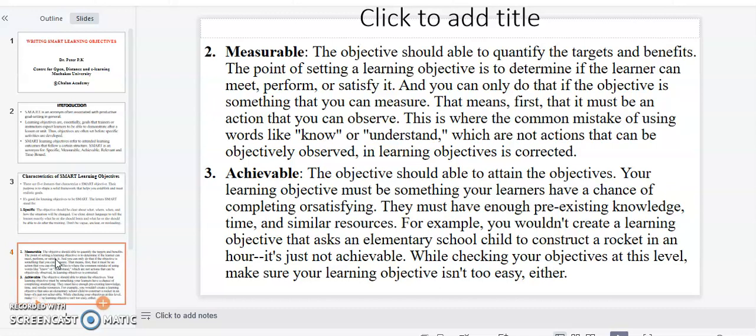This is where the common mistake of using words like 'know' or 'understand,' which are not actions that can be objectively observed in learning objectives, is corrected. Some examples that can be used are: by the end of the lesson the learner should be able to explain, to state, to list, among many other verbs.